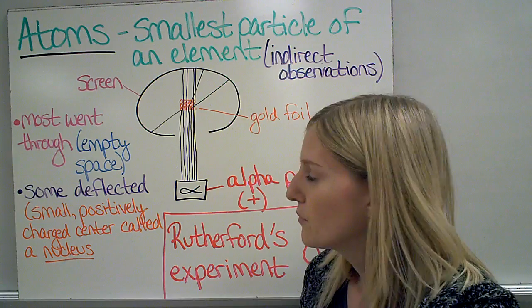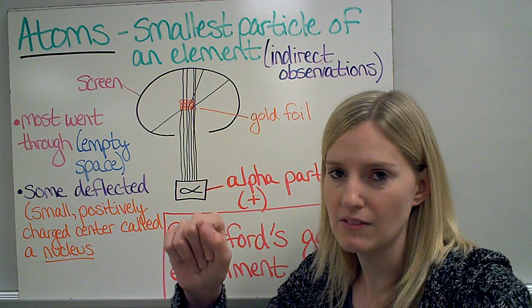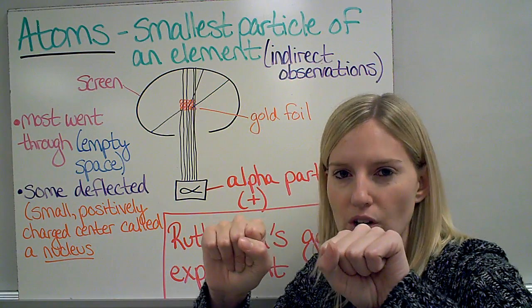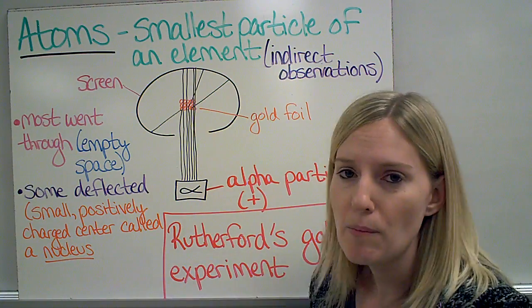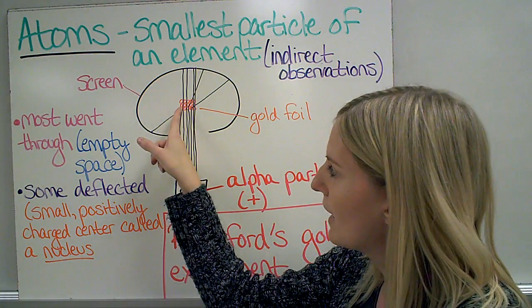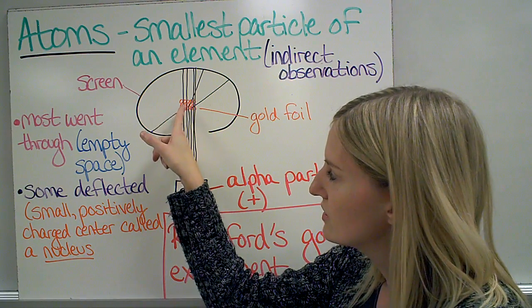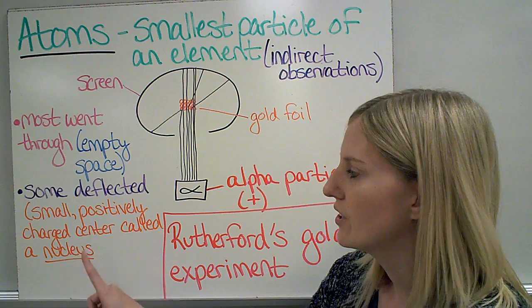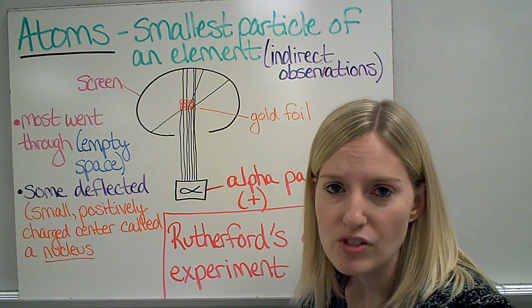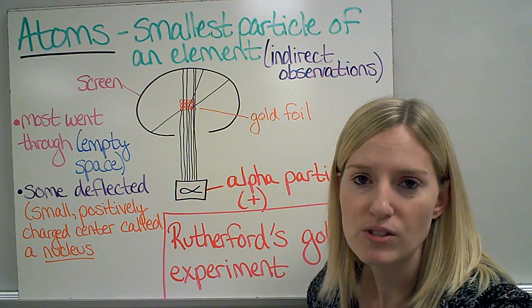Likes repel, right? Positive and positive, they're not going to want to go together. They repel, and that's what happened here. The alpha particle was positive, it hit the positive nucleus, and that caused it to go off at these different angles. That center, which has an overall positive charge, is called our atom's nucleus.